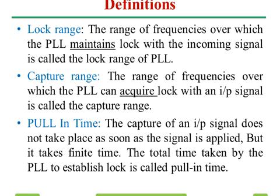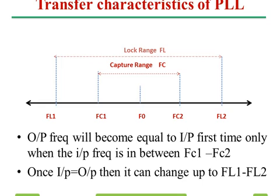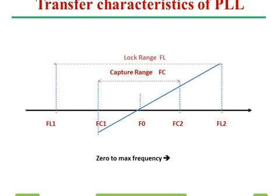Lock range is the range of frequencies over which the PLL maintains lock with the incoming signal. Capture range is the range of frequencies over which the PLL can acquire lock with the input signal. Pulling time is the time taken by the PLL to establish lock. You will get zero followed by higher and higher frequency, moving towards infinity.